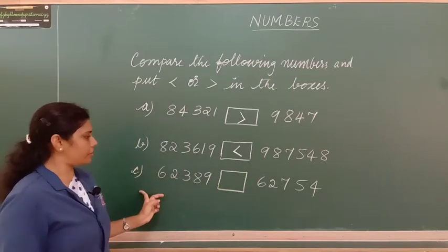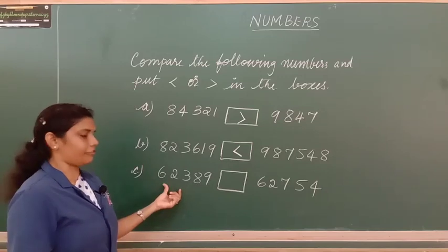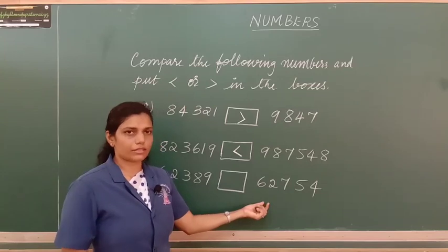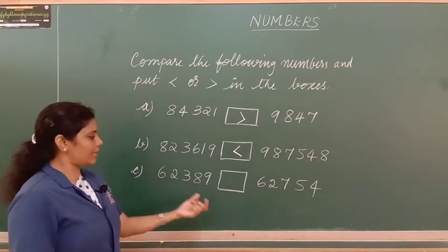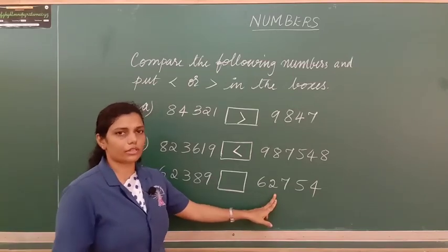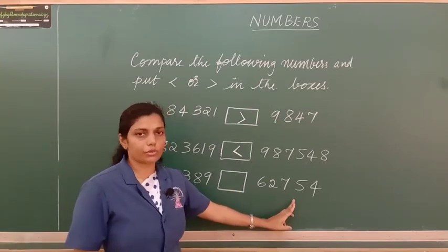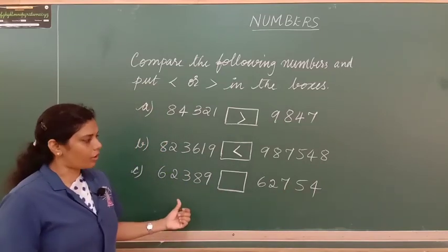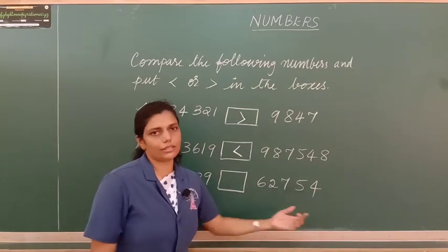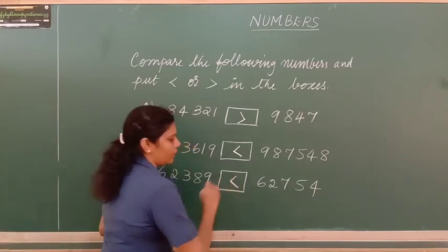In the last problem we again have equal number of digits. Starting from the leftmost digit: both have 6, then both have 2, so we move to the next digit — 3 and 7. Since 7 is bigger than 3, we conclude that 62,754 is greater than 62,389, so we put the less than symbol.